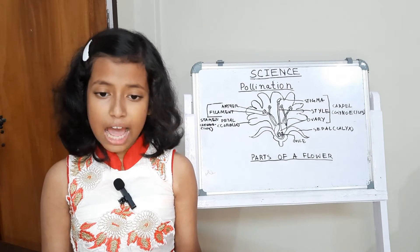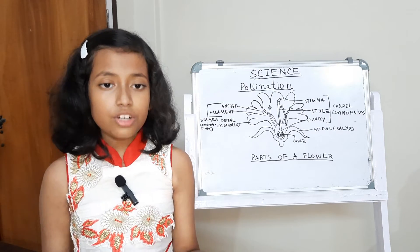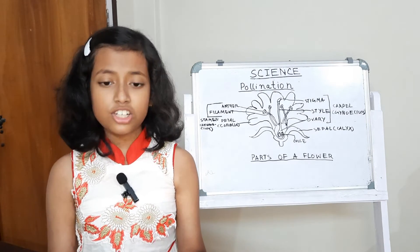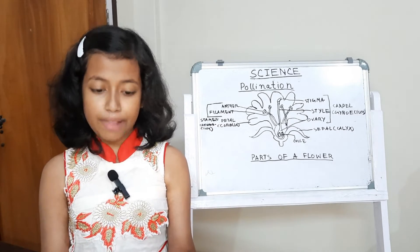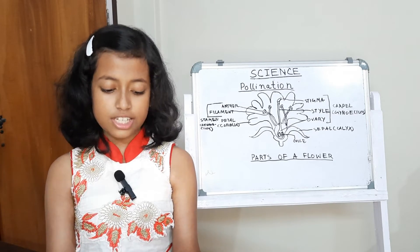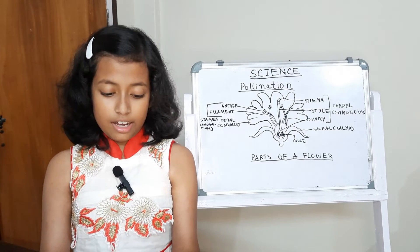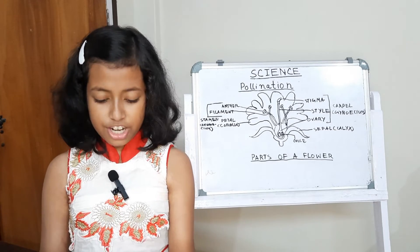Types of pollination. Pollination is of two types. Self-pollination: In self-pollination, pollen grains are transferred from anther to the stigma of the same flower or other flowers of the same plant. Cross-pollination: When the pollen grains are transferred from anther to the stigma of a flower of another plant of the same kind, it is called cross-pollination.